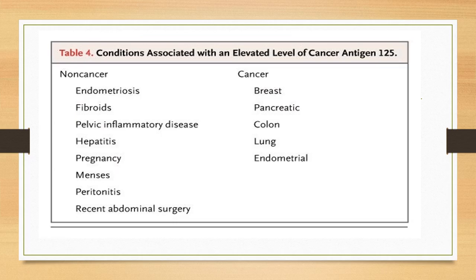Other conditions in which CA125 is raised include breast, pancreatic, colon, lung, and endometrial cancer. Non-cancerous conditions that also raise CA125 include endometriosis, fibroids, PID, hepatitis, pregnancy, menses, peritonitis, and recent abdominal surgery.